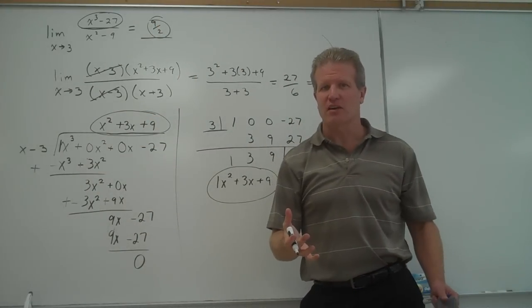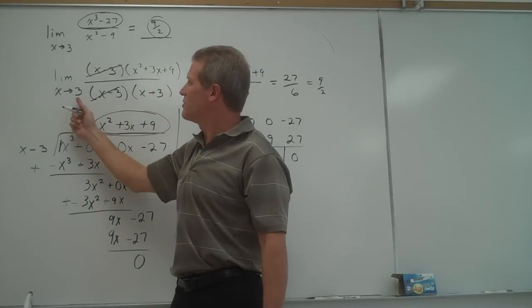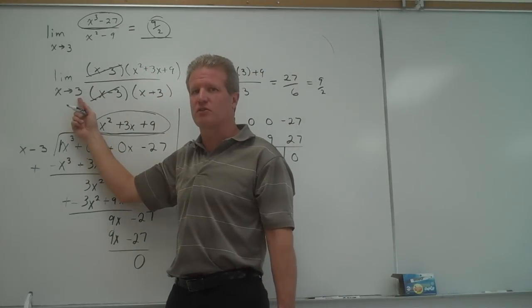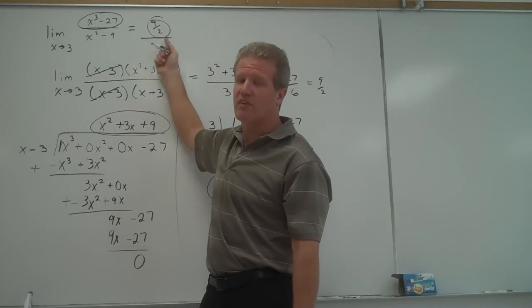Now, of course, if you were allowed to use a graphing calculator, you could also graph this quantity and then type in numbers very close to 3. And as x gets closer and closer to 3, you would notice that the y coordinate would get closer and closer to 4.5.